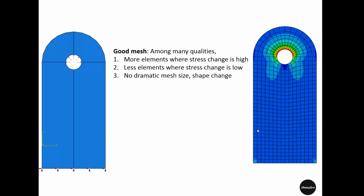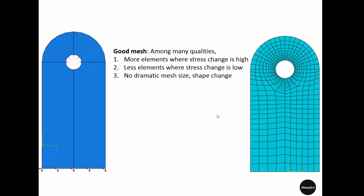Finally, there should be no dramatic mesh size or shape change. For example, all the way through here the size of the mesh was sort of consistent — maybe it reduced here, but it was quite consistent as it reduced slowly. The shape change is also not dramatic because if you look at these quadrilateral elements, the lengths of different sides are quite similar. If an element had two very long sides and two much shorter sides, we would say the shape of that element is dramatic.